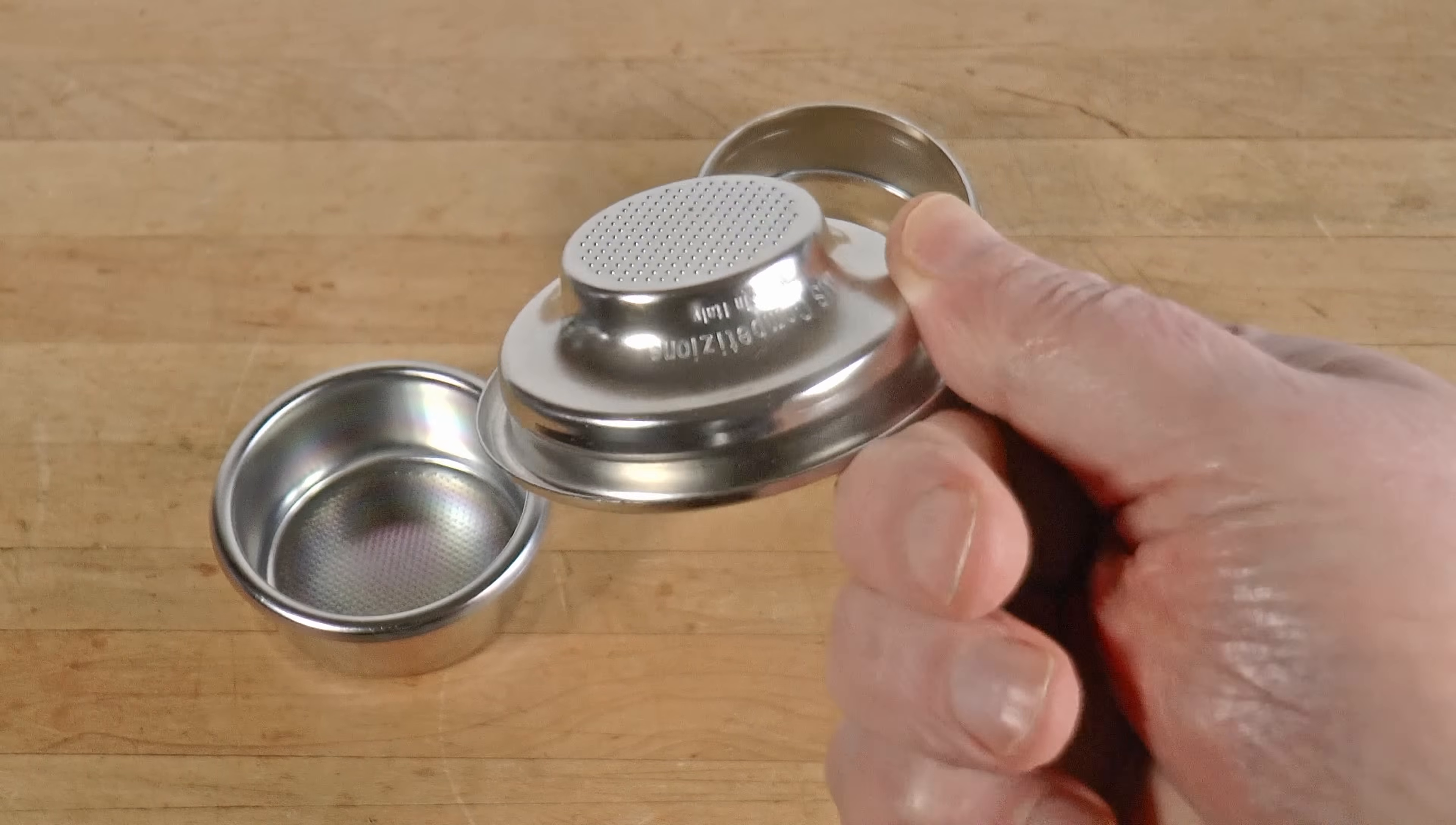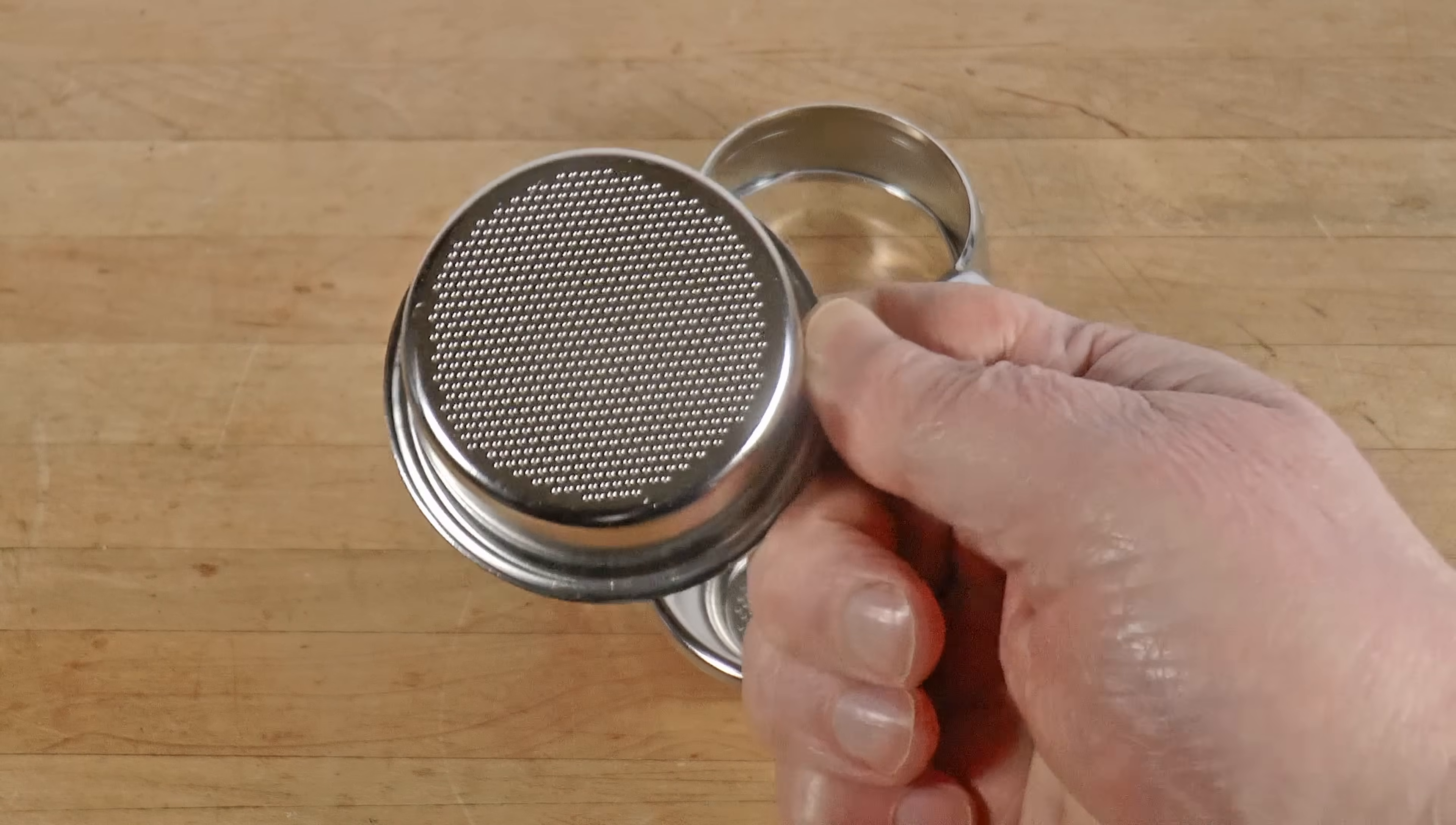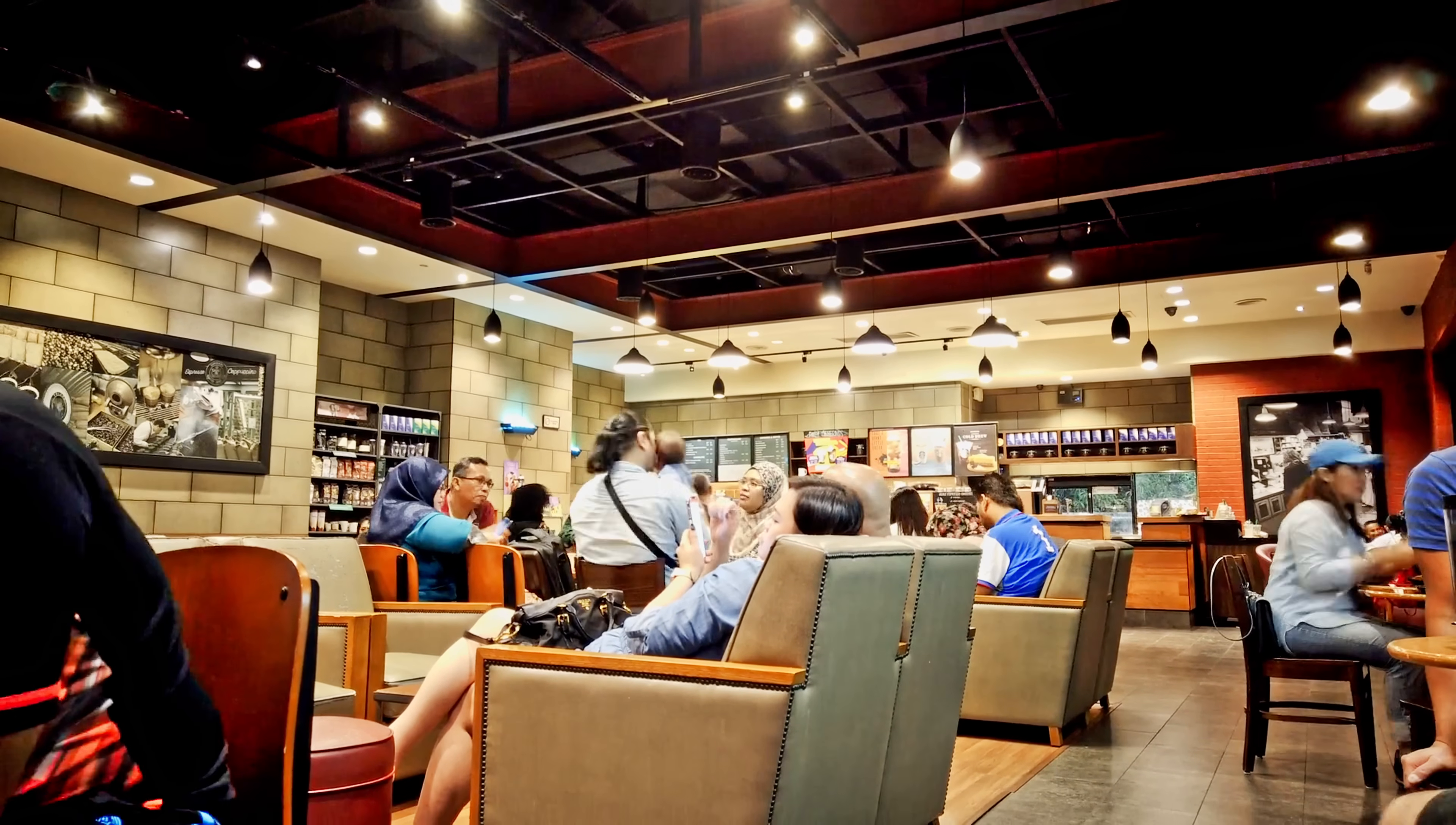Go dig this little gadget out of the junk drawer that you tossed it in when you unpacked your machine and put away those triple baskets. But Thomas, I hear you thinking, that's what professionals use. And you are right. In a commercial environment, it makes practical sense to pull doubles and triples and split them. But that's done for efficiency, for customer throughput, not flavor.